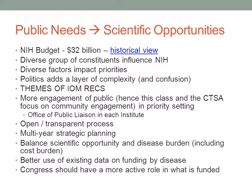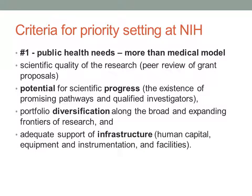The IOM also says NIH needs to use their current data better. If you go online today, they're really doing a good job of providing all their funding data to the public — they show how it's focused on certain diseases, how much money each institute is getting, and so on. There's lots of great info there, so go to the NIH website and take a look at it. Finally, the IOM suggests that Congress should be more actively involved. The IOM goes through the various criteria used for priority setting at NIH.